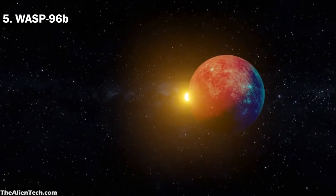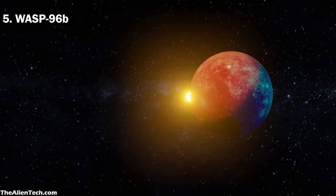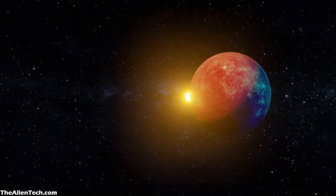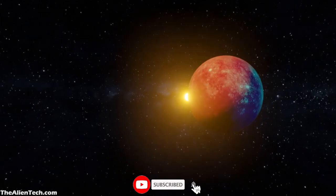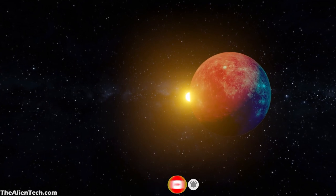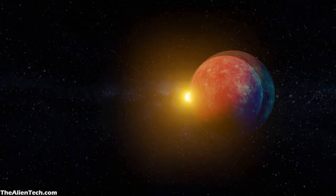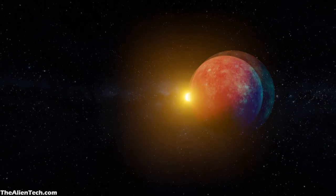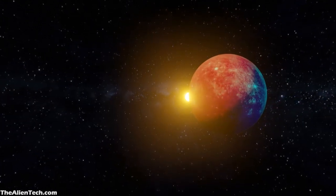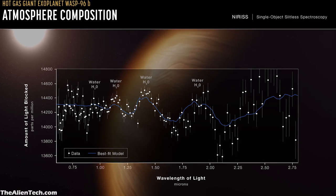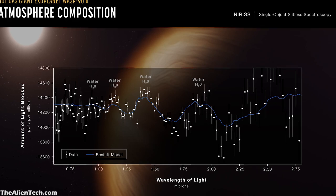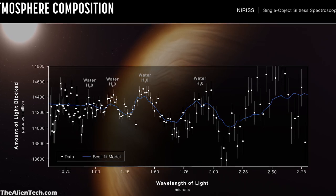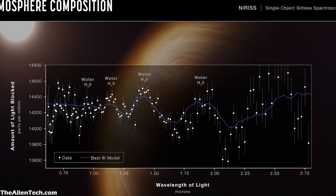The last image is of WASP-96b, an exoplanet 1,150 light-years away. Its mass is half of Jupiter's, and it has a diameter 1.2 times greater than Jupiter. It is a hot planet with a temperature of more than 540 degrees. It orbits around its star at one-ninth of the distance between the Sun and Mercury, taking about 3.5 Earth days to complete one orbit. When Webb observed this planet, it found spectra showing the presence of water vapor in its atmosphere. Researchers will be able to use this spectrum to measure the amount of water vapor, find elements like carbon and oxygen, estimate atmospheric temperature, and determine what the planet is made of and when it was formed.